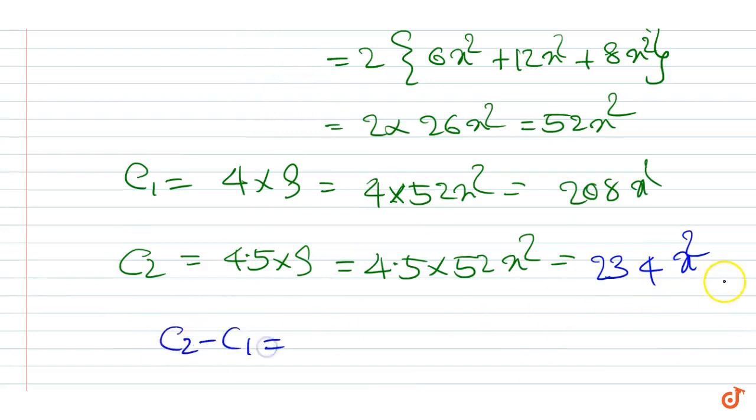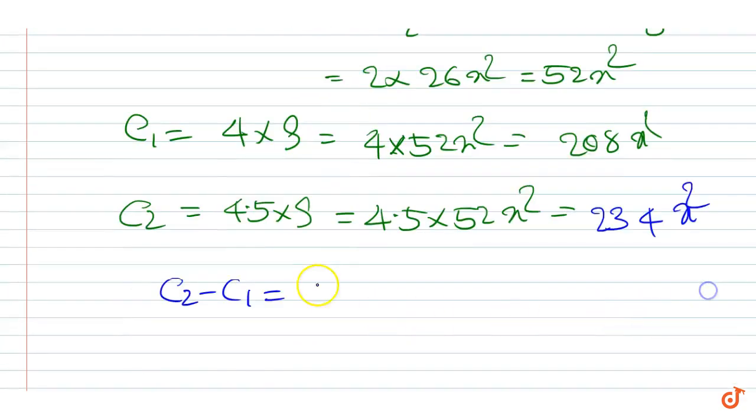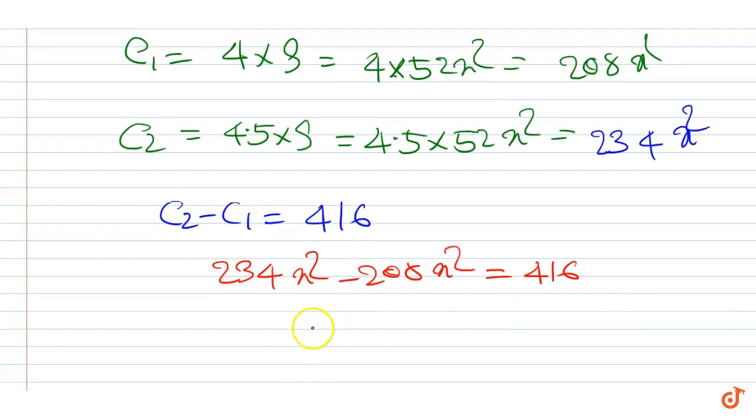Now, C2 minus C1 is equal to 416. So 234x² minus 208x² equals 416, that is, 26x² equals 416.